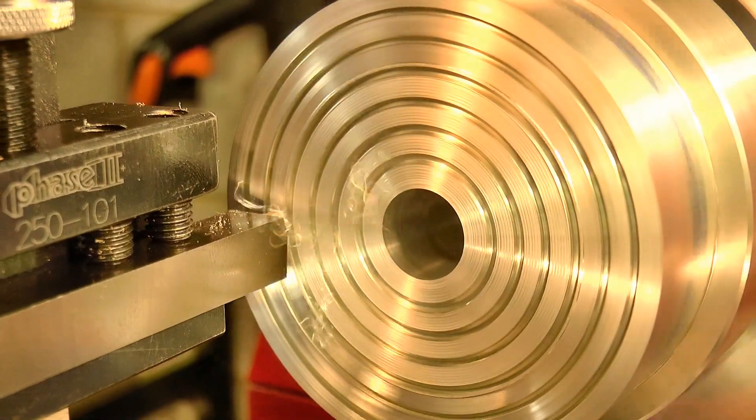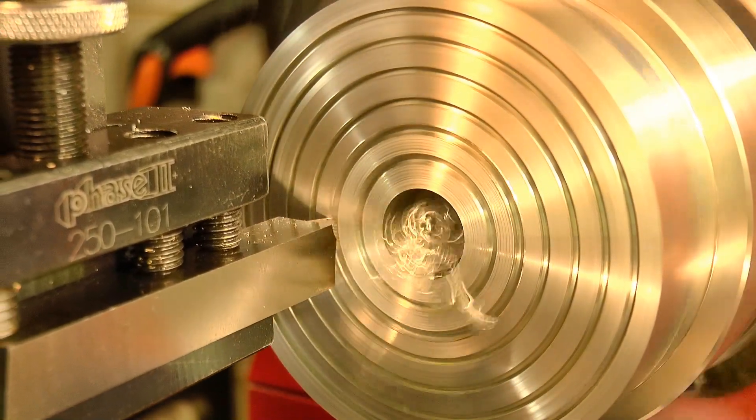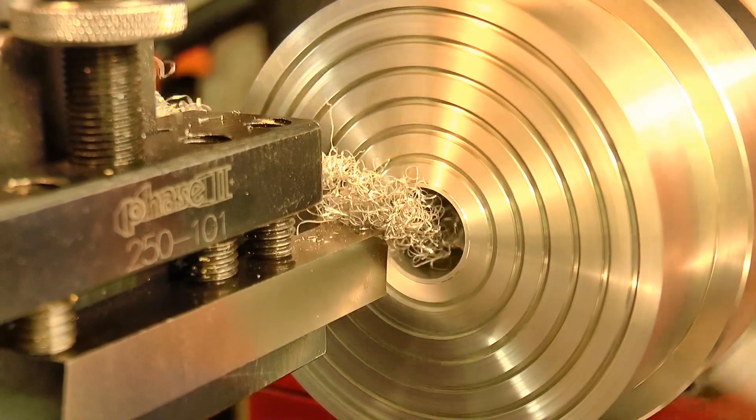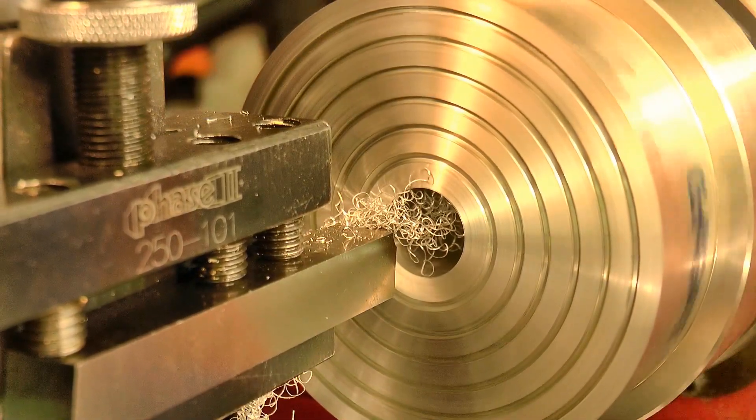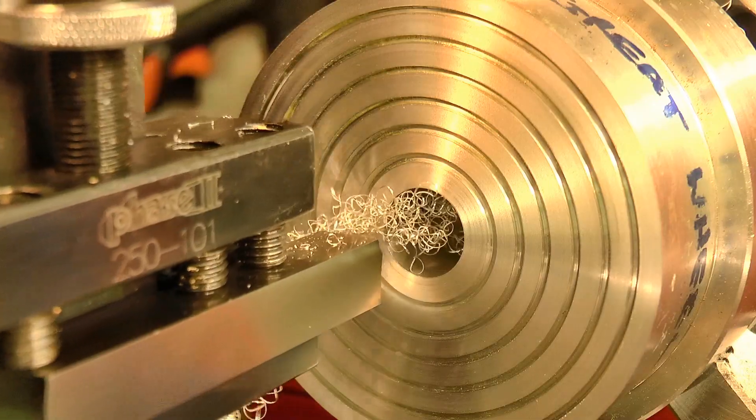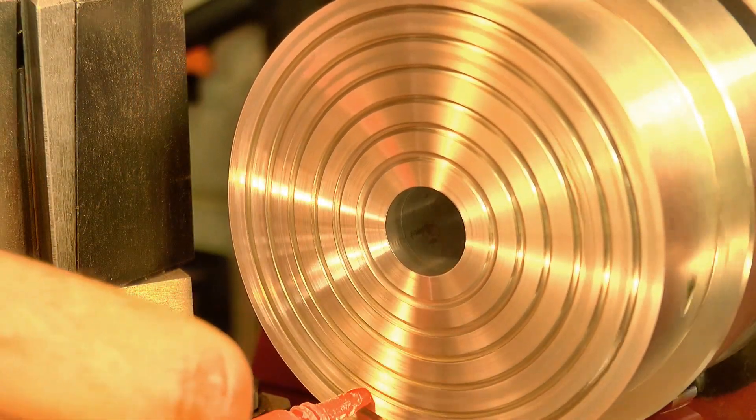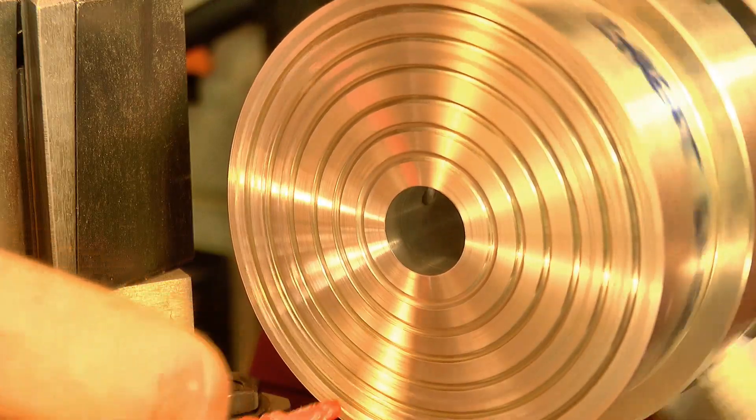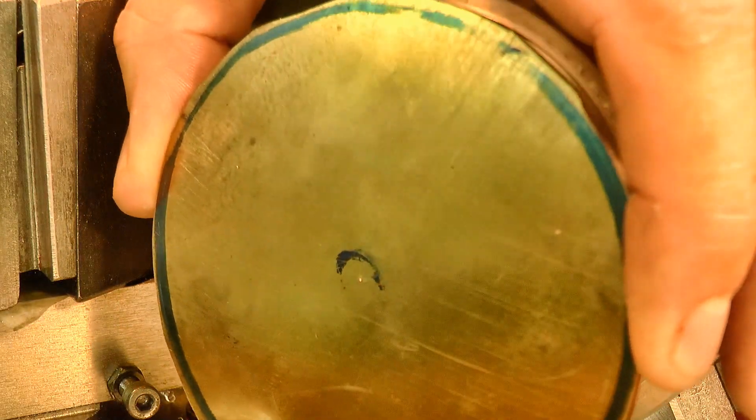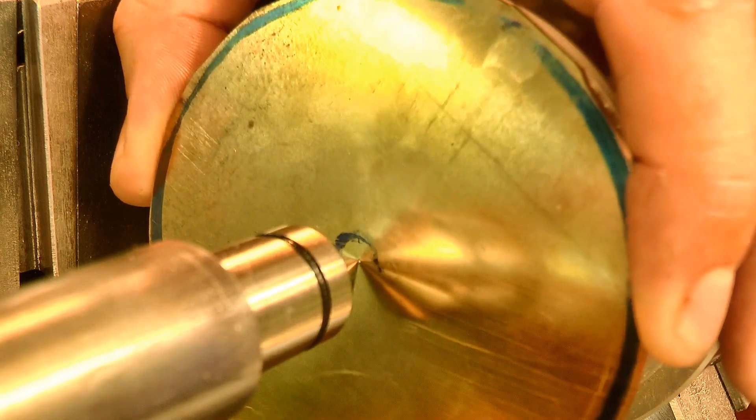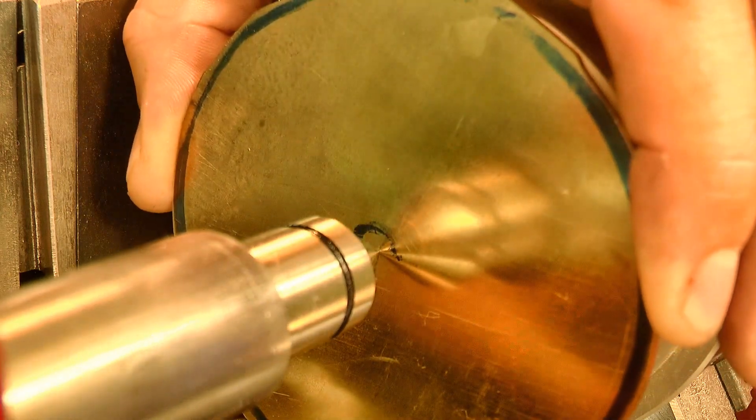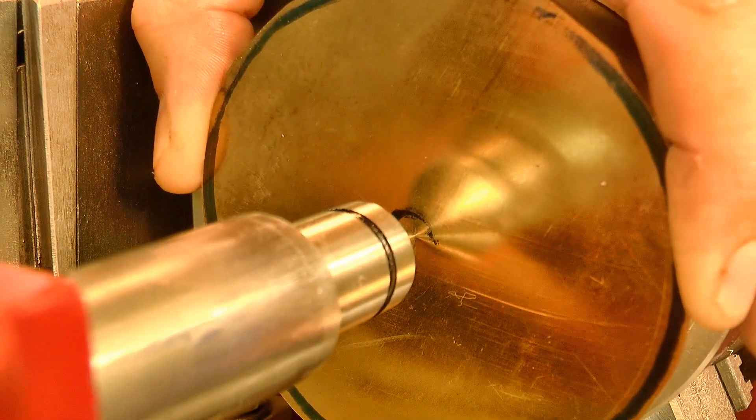The face of the chuck can be trued up if required. A little glue is applied, and then the rough blank is held in place with the tailstock for a few minutes while it sets. It's sort of the modern version of the shellac wax chuck that watchmakers have traditionally used.